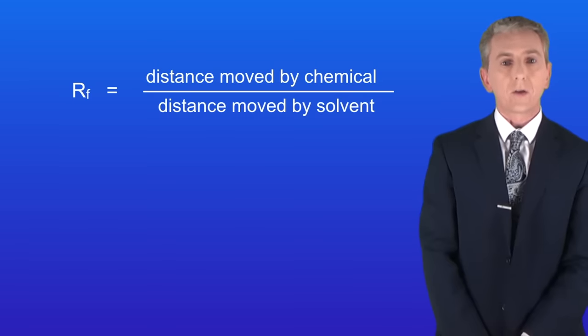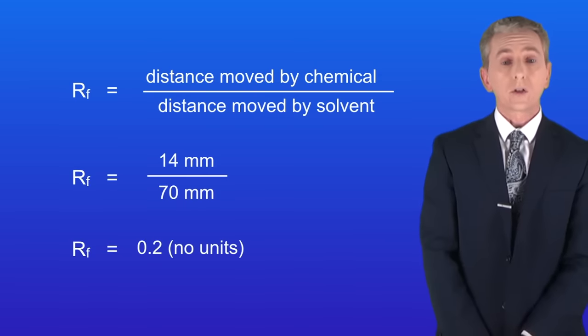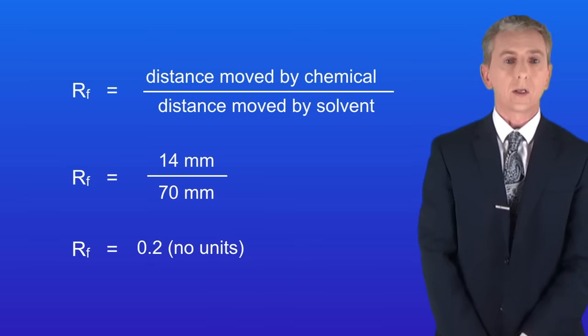To calculate the Rf value we divide the distance moved by the chemical by the distance moved by the solvent like this. So this gives us an Rf value of 0.2 for the chemical in color A. Notice that Rf values do not have a unit.